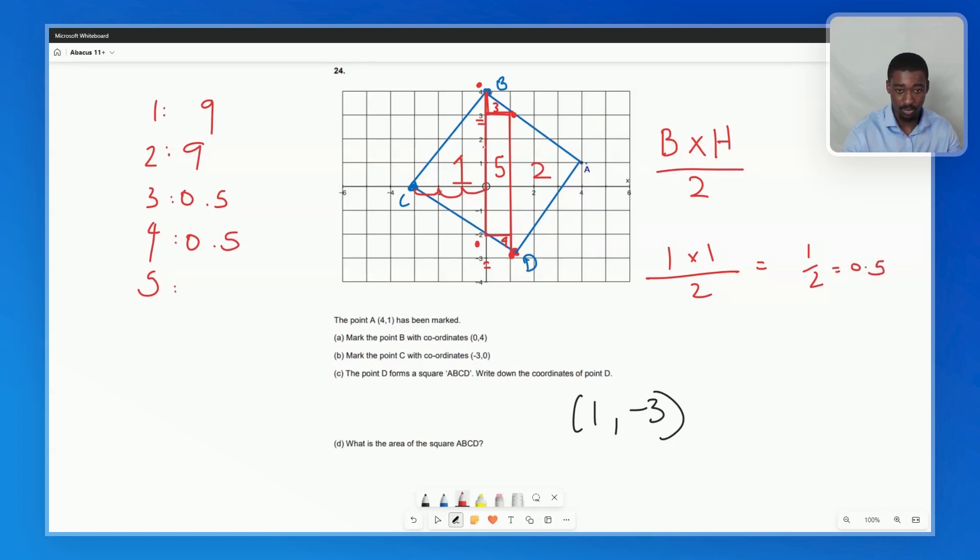And finally, we have our rectangle in the middle. Here, we have the formula is simply length times width. So what is our length? We have 1, 2, 3, 4, 5 times the width of 1, which we can see pretty clearly. And this gives us 5.